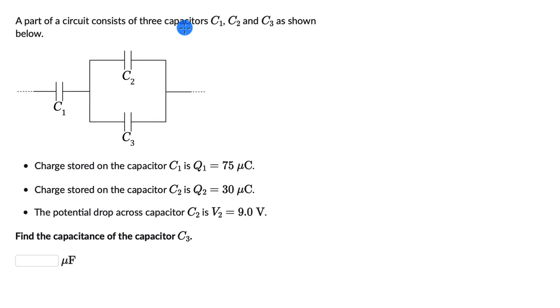A part of a circuit consists of three capacitors C1, C2, and C3 as shown below.